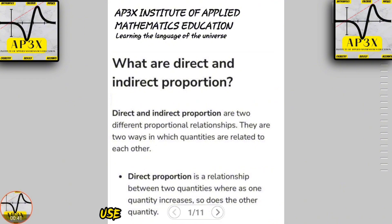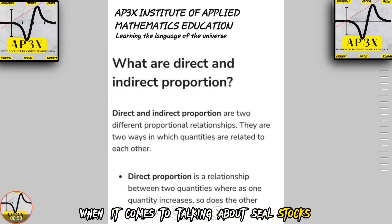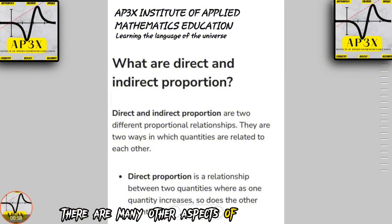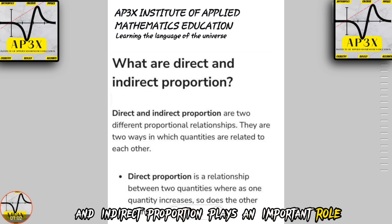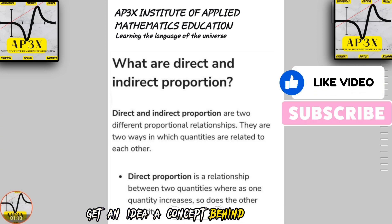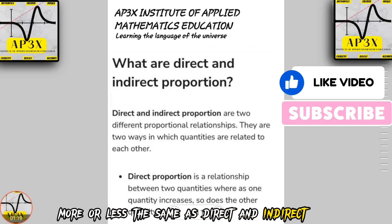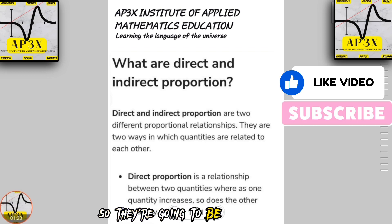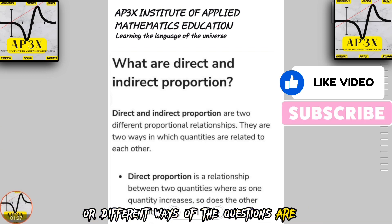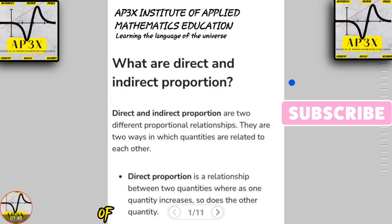You are going to be learning how to use direct and indirect proportion in topics like ratio and consumer arithmetic — when it comes to sales tax and discount, among others. There are many aspects of math in which direct and indirect proportion plays an important role, but it's most important that we get the concept behind its application. Direct and indirect proportion is more or less the same as direct and indirect variation, so questions may be stated in different ways.